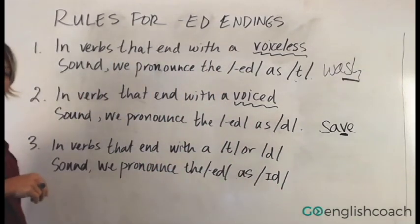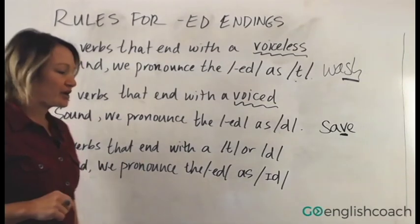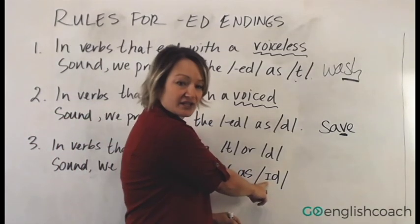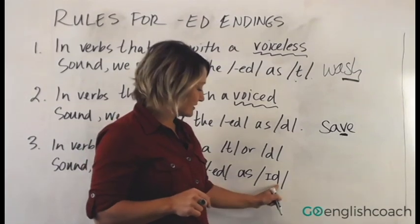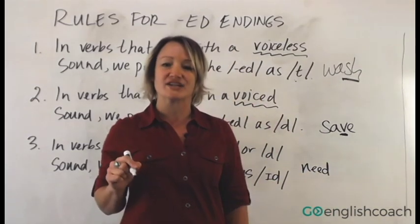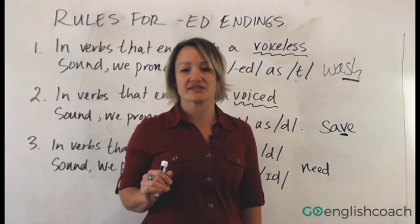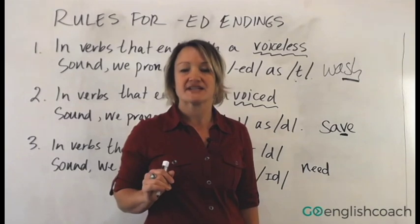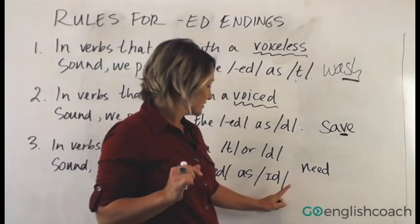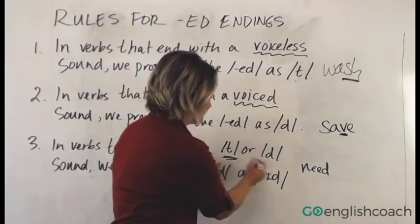The last rule: in verbs that end with a 't' or a 'd' sound, we pronounce the '-ed' as 'id' — a little extra sound. In the example 'need,' the final sound is a 'd,' so we pronounce the '-ed' as 'needed.' That little extra sound is just a short 'id.' So 'needed' is the pronunciation when the verb ends with a 't' or a 'd.'